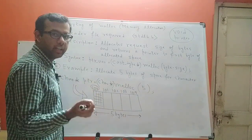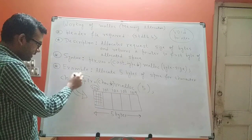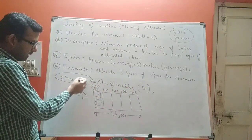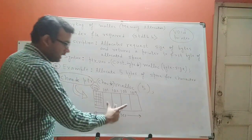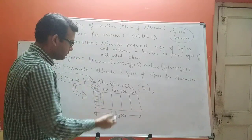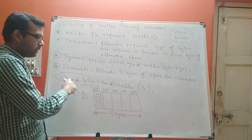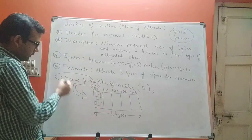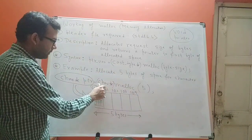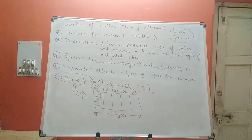Only pointer variables are able to hold addresses, which is why on the left-hand side of the expression you find a variable called ptr which is a pointer to a character. It is a pointer to a character because in this memory block I want to store a character. Also remember: the cast type must be the same as the type of the pointer. Here the cast type is char star, so the pointer type must also be char star. This is how malloc works.